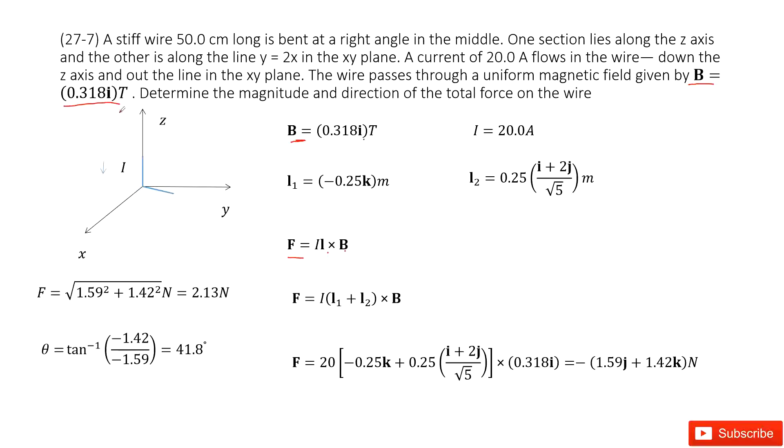As we can see, the current has two directions. First one is pointing to negative z, so this is negative k. And the length is 0.25, half of the total length.